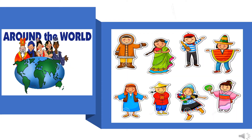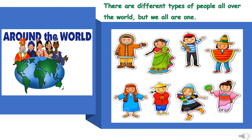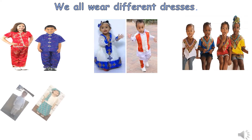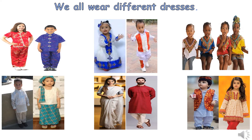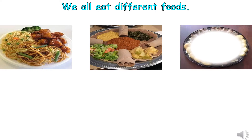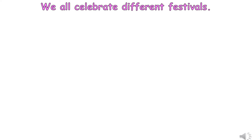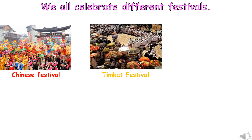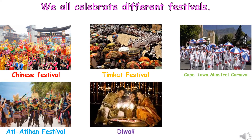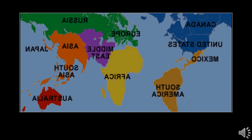There are different types of people all over the world, but we all are one. We all wear different dresses. We all eat different foods. We all celebrate different festivals. This is because we have different cultures.